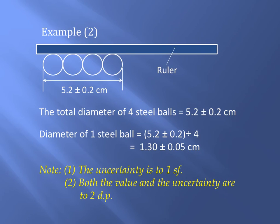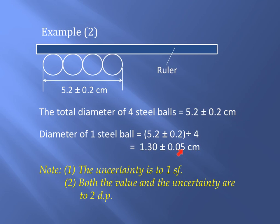Example 2: four steel balls are lined up in a straight line and their total diameter is measured. To find the diameter of one steel ball, divide both the value and the uncertainty by 4. The result is 1.30 ± 0.05 centimeters — uncertainty to one sig fig, and both value and uncertainty to two decimal places.